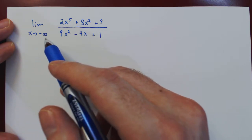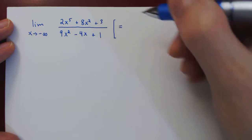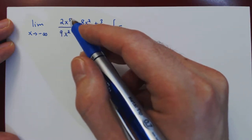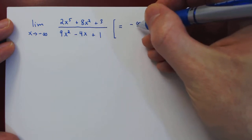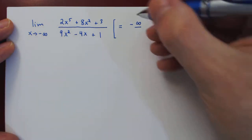As we are letting x approach negative infinity, what will be driving the expression on the numerator is the largest term 2x^5, which goes to negative infinity, and on the denominator it is 9x^2, which goes to positive infinity.